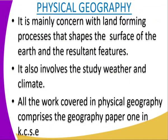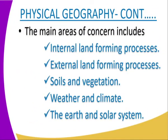We start by looking at physical geography. Physical geography is mainly concerned with the land forming processes — the processes that influence the shapes the surface of the earth will take and also the features found on the earth's surface. It involves even the study of weather and climate. All the work done in physical geography is tested in Geography Paper One in the Kenya Certificate of Secondary Education. Its main areas include internal natural land forming processes, external land forming processes, soil and vegetation, weather and climate, and the earth and the solar system.